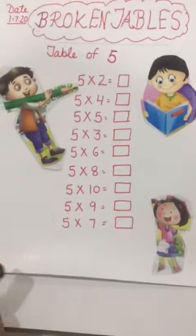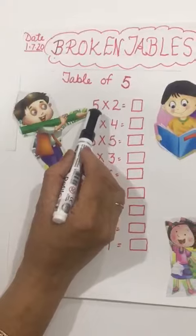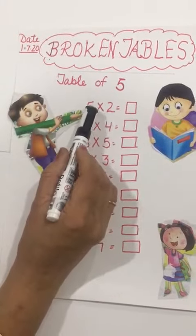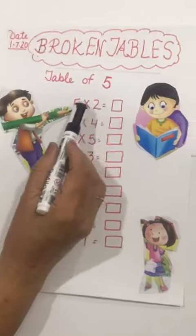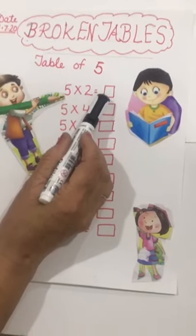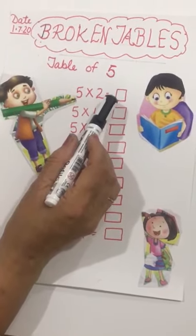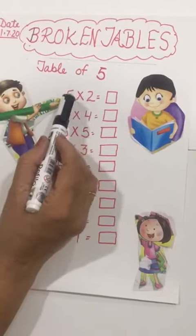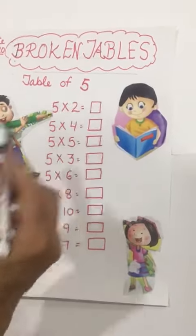Children, tell me: five twos are? Samiksa, tell me — five twos are ten. Five twos are ten.